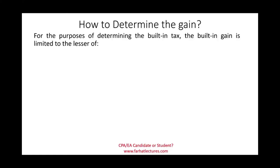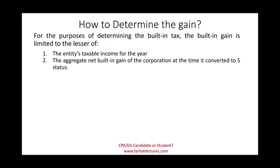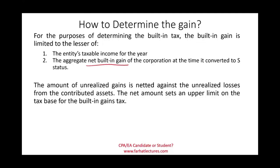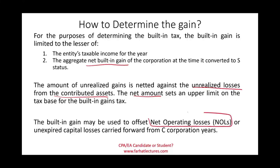To determine the built-in gain for tax purposes, the gain is limited to the lesser of: the entity's taxable income for the year, or the aggregate net built-in gain for the corporation at the time it converted to S status. This requires a netting process — net built-in gains minus losses. This net amount sets an upper limit on the tax base. The built-in gain may also be offset by any NOLs or unexpired capital losses carried forward from the C corporation years.